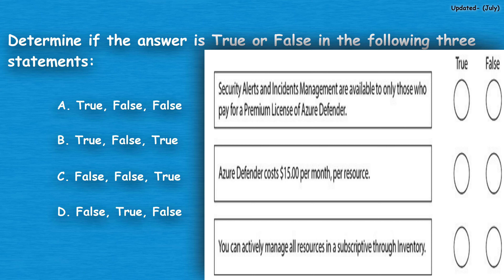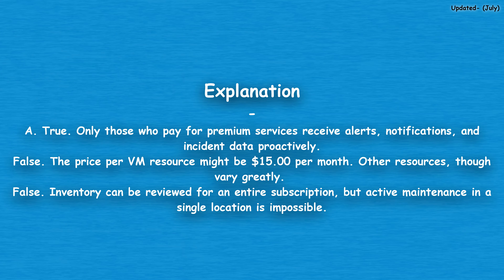The correct answer is option A: true, false, false. True — only those who pay for premium services receive alerts, notifications, and incident data proactively. False — the price per VM resource might be $15 per month, but other resources vary greatly. False — inventory can be reviewed for an entire subscription, but active maintenance in a single location is impossible.